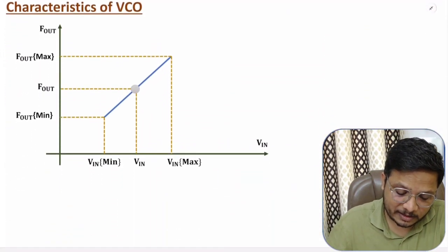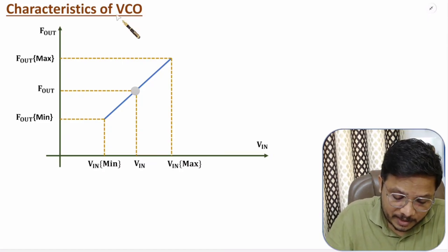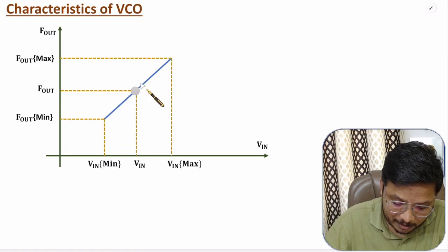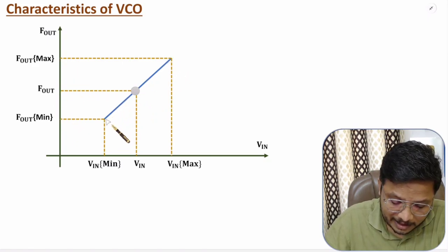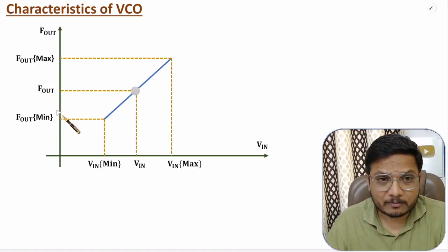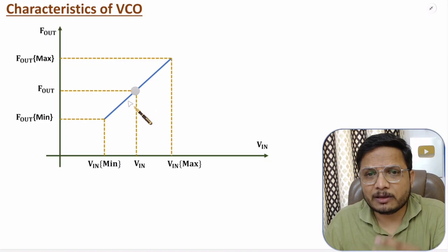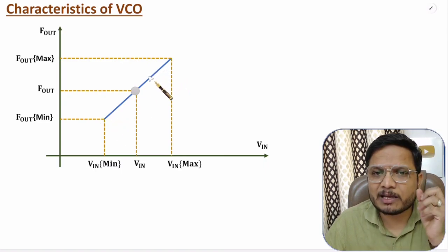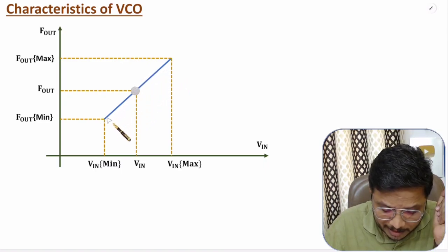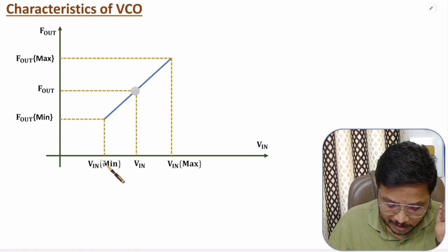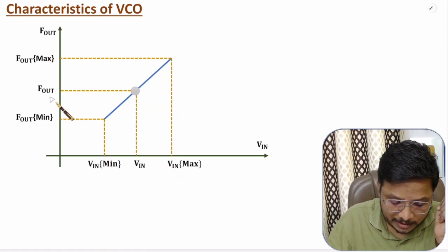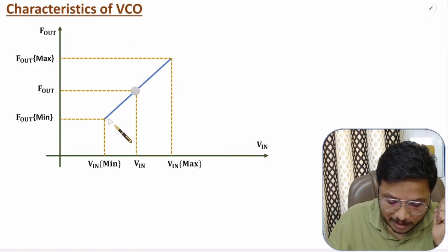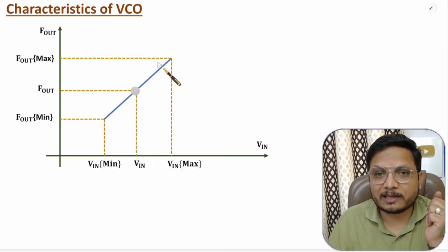You can observe the characteristics of VCO here. As you increase V_in, frequency is also increasing linearly. This characteristic depends on the IC — it is not necessarily linear every time. Here I have shown a simple characteristic where increasing V_in results in increasing output frequency.